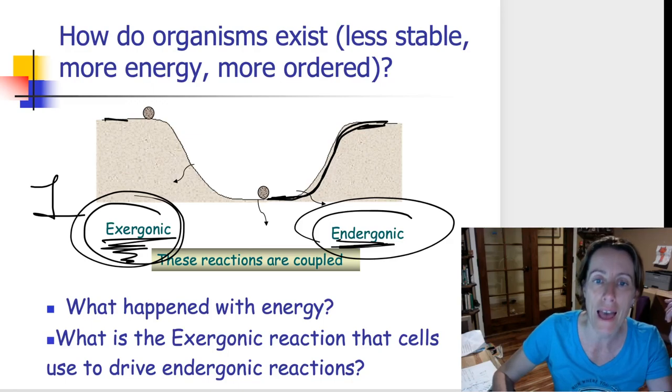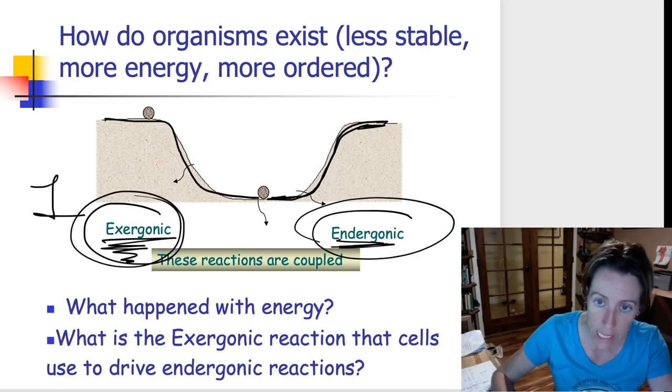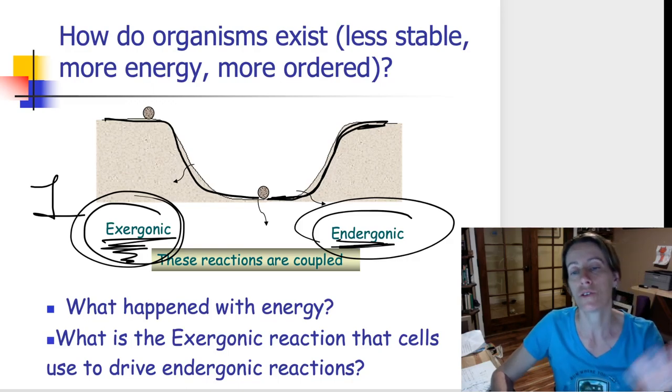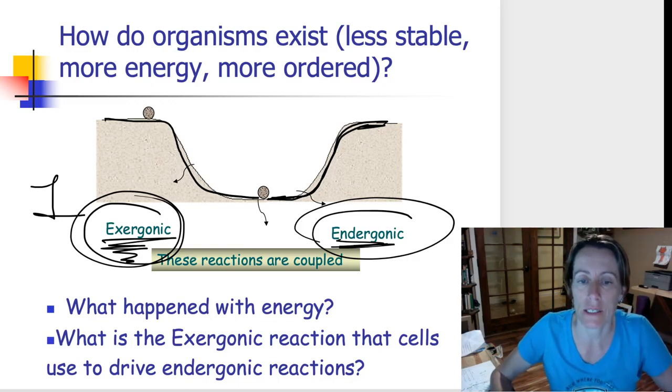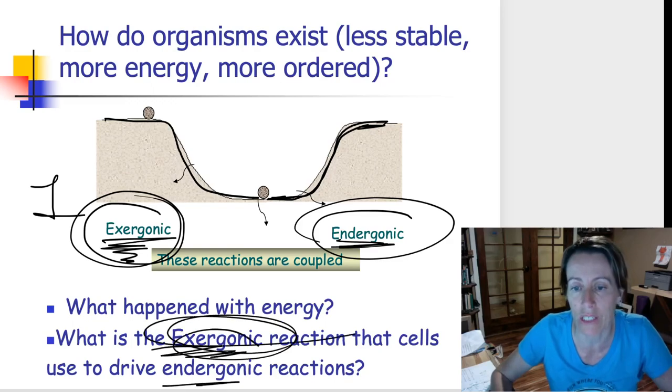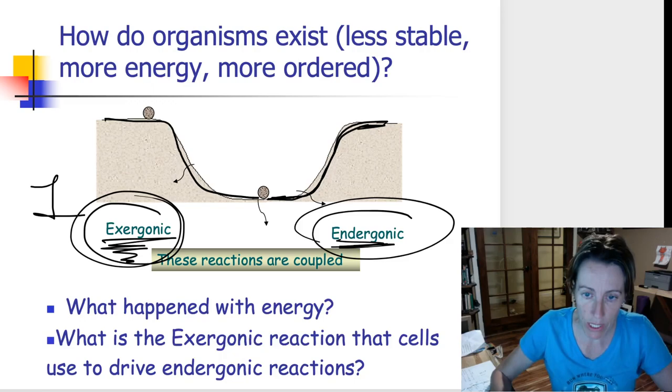But on the left, there's one go-to reaction that we use in our bodies a bajillion times a day that releases energy that is used to power all the other stuff we need to get done. So what is this magical exergonic reaction that we do in our bodies that we use to drive our endergonic processes?